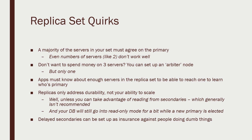There are a lot of quirks with MongoDB. For one thing, you have to have a majority of servers in your set to agree on who the primary is, so you can't have an even number of servers. That implies you need at least three servers if you want replication or some sort of durability, and that can get expensive. To get around that limitation, they have something called an arbiter node — its only job is to vote on who the primary should be in the event of a failure. You can only have one arbiter node in your cluster, which is a purposeful decision to make sure breaking ties in a primary election happens quickly.